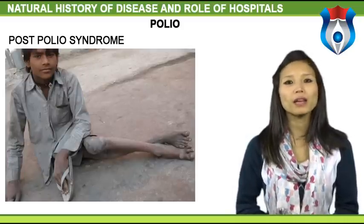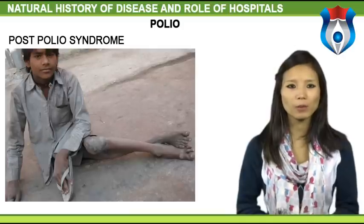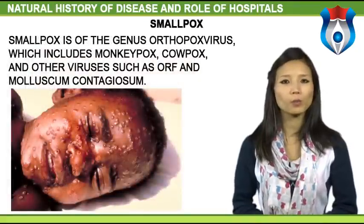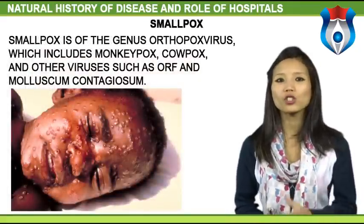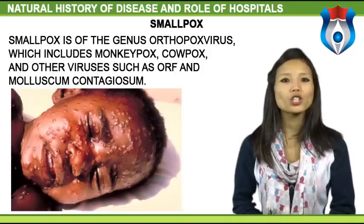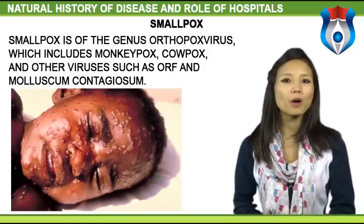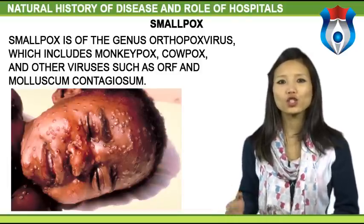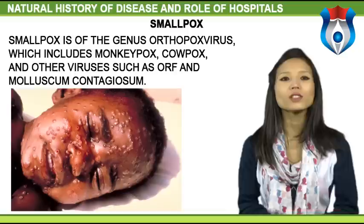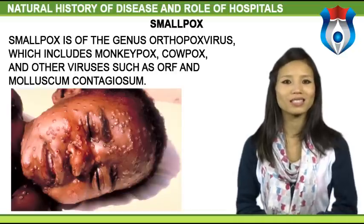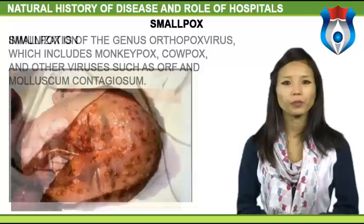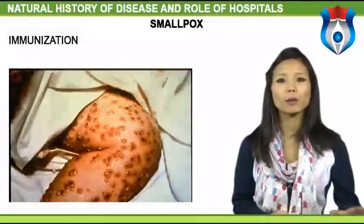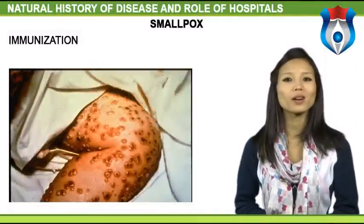The major effects of PPS include muscle weakness in areas both affected and unaffected by the original infection. Smallpox is of the genus Orthopoxvirus, which includes monkeypox, cowpox, and other viruses such as orf and molluscum contagiosum. With a fatality rate of approximately 30%, smallpox is the deadliest of the variola viruses. Smallpox no longer occurs in nature — not because of a treatment but because of a system of vaccination. After World War II, the World Health Organization decided to eradicate the disease and vaccinations were administered worldwide.